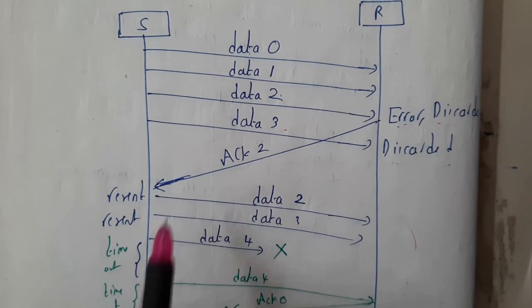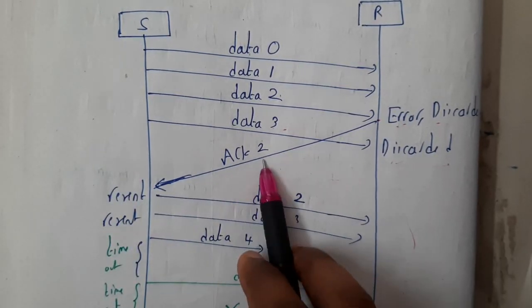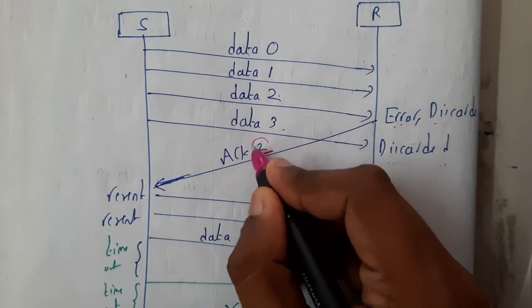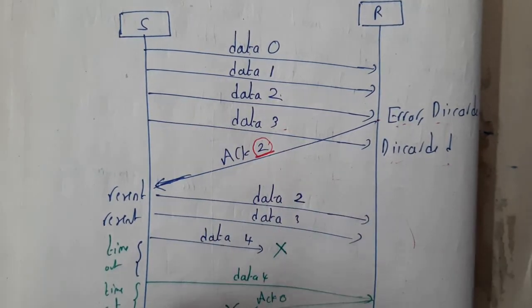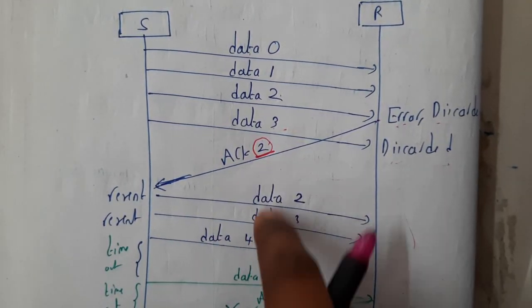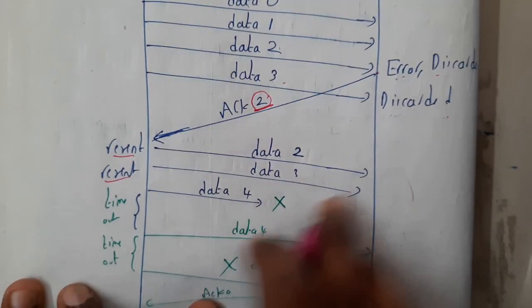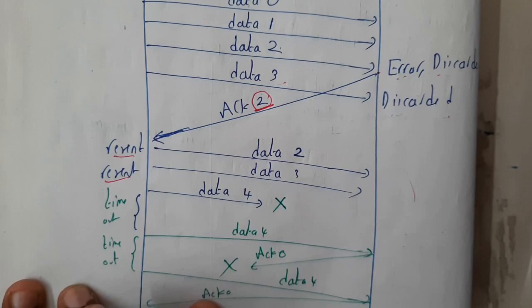Acknowledgement 2 indicates that from 2, the second data type, you need to send it again. So from data 2 you will be resending guys. You will be resending data 2 and data 3. So now after some time you may get the acknowledgement. So in this way you will be doing this in go back.